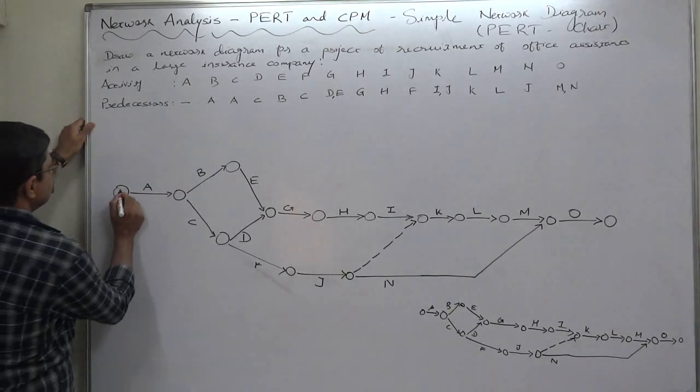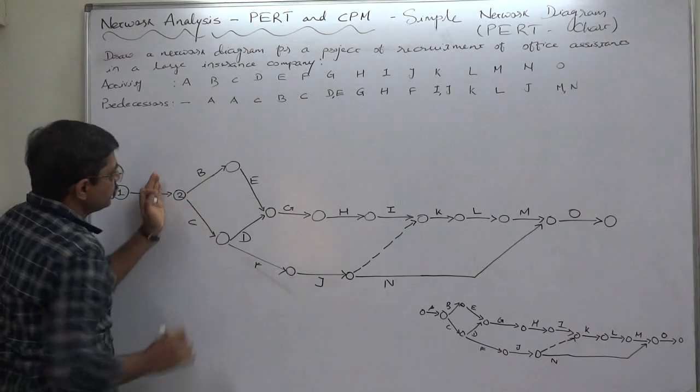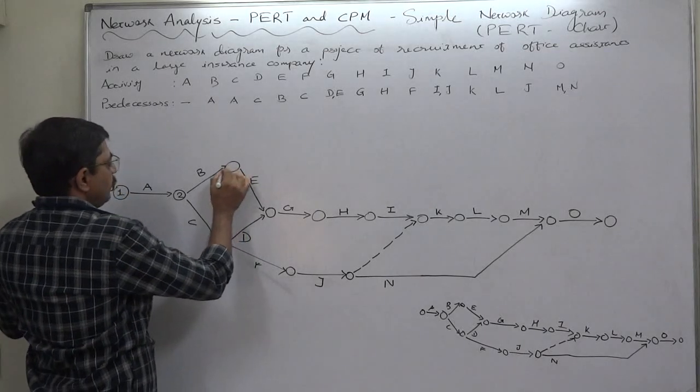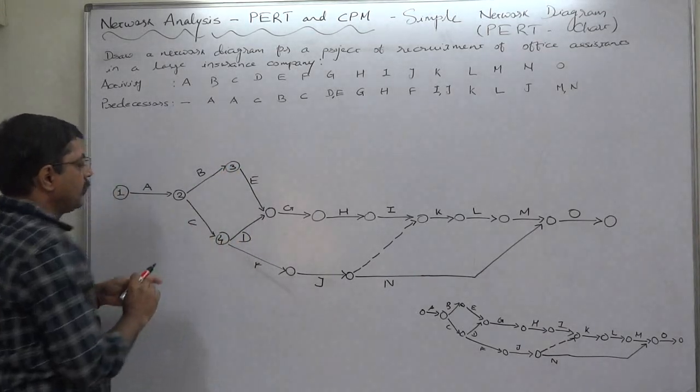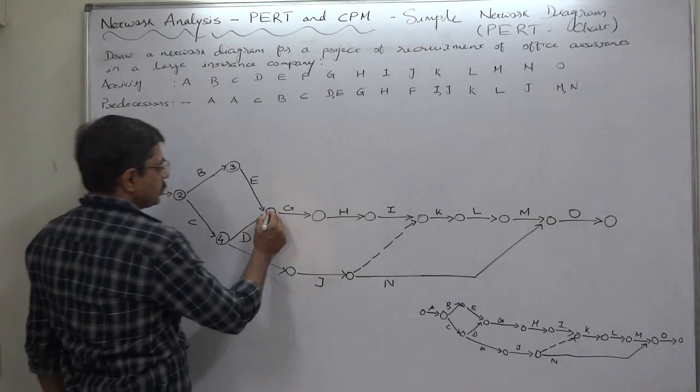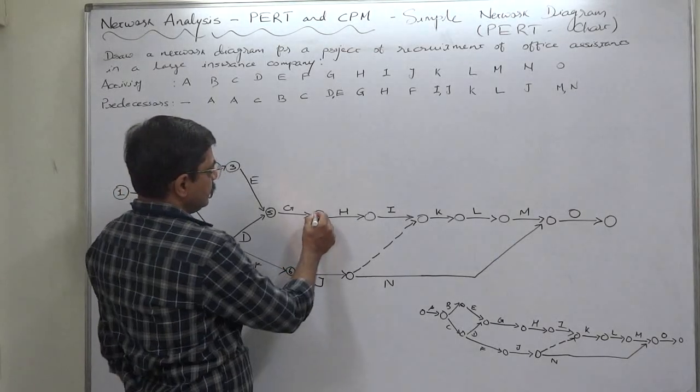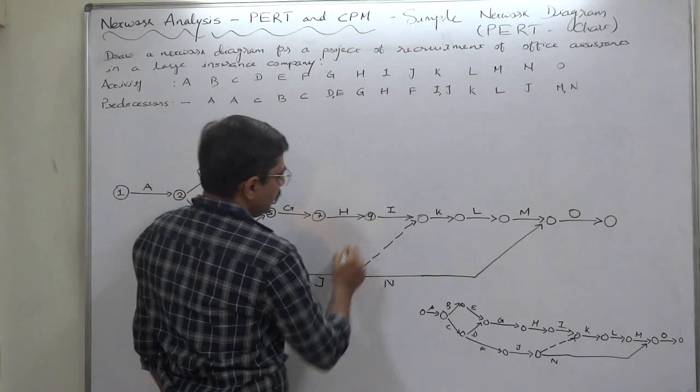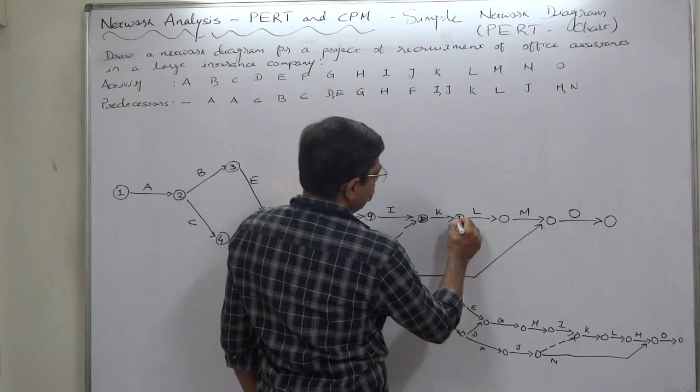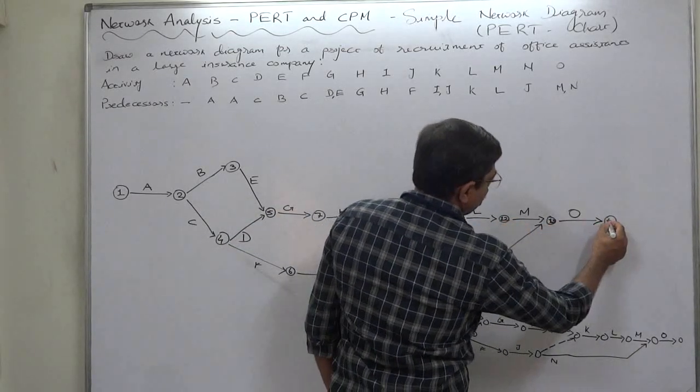Now it is turn of numbering. This is initial one. This is also initial but number two is there. These are more or less vertical: three, four. It is not compulsory to draw them on a vertical line only. This should be five, six, seven, eight, nine, ten, eleven, twelve, thirteen, and fourteen.